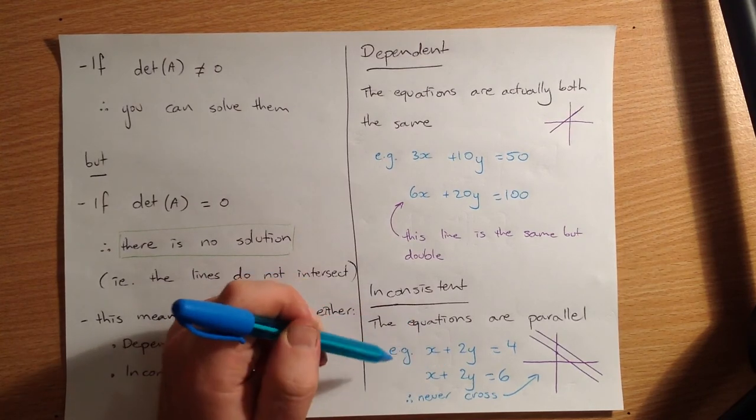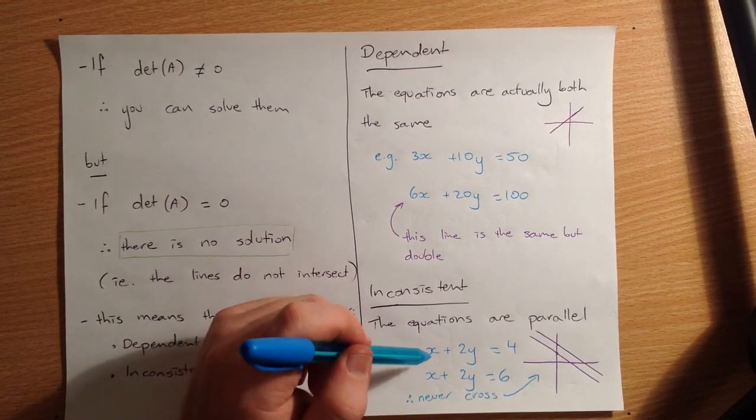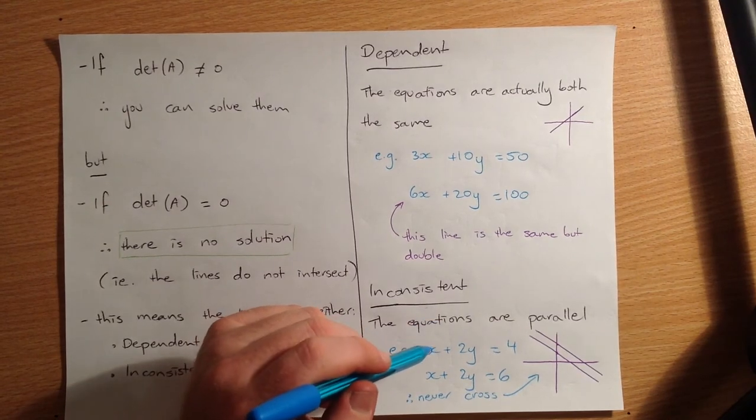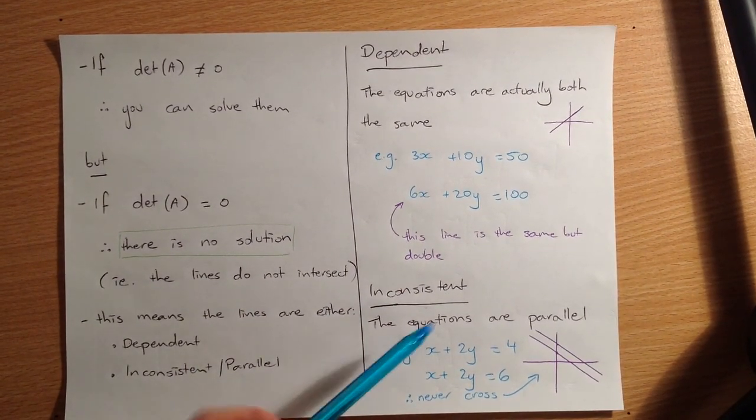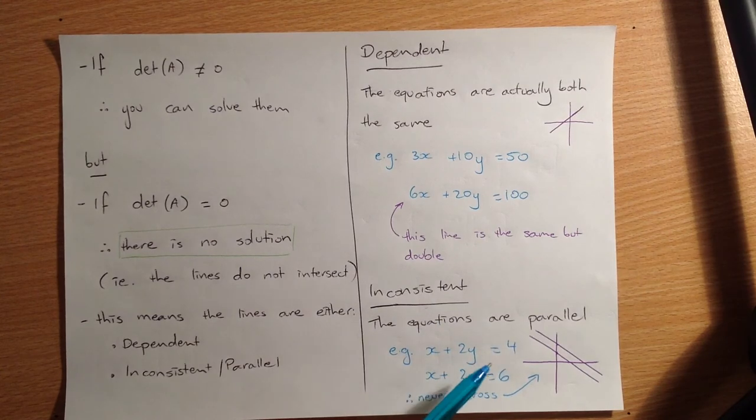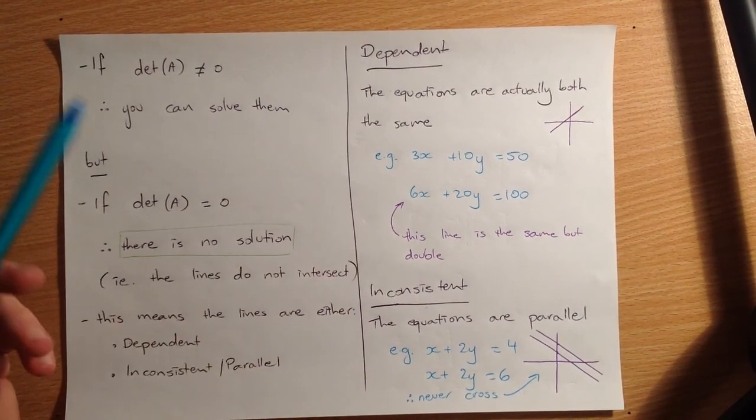But when you ask your calculator to solve this for you, it will say... I can't even remember what it will say. If you look for the determinant, it will tell you the determinant is zero. And you'll be like, oh, okay, that's a problem. There's no solution. You don't have to say they're parallel, therefore no solution, or they're dependent, therefore no solution.